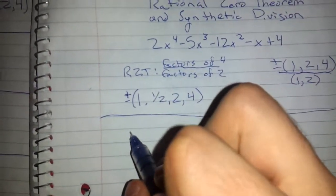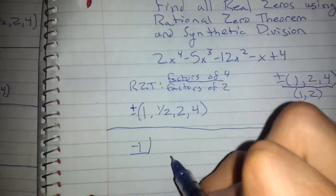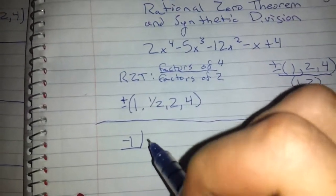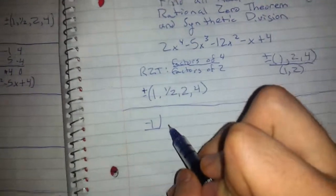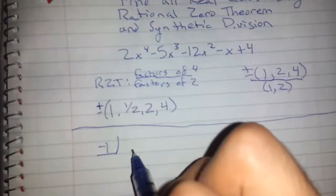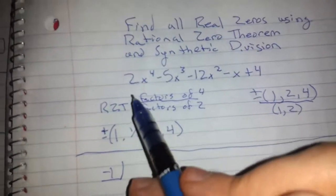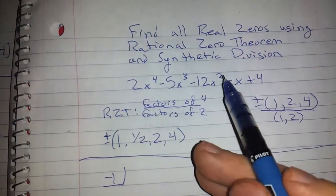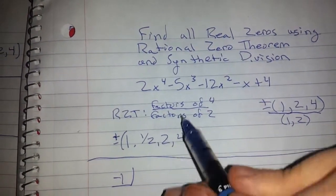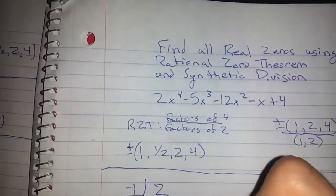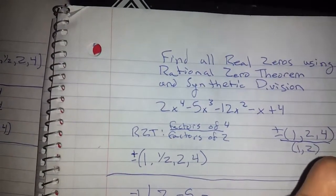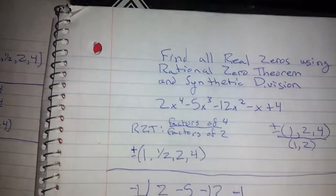Luckily for me, that was only negative 1. So we're saving a little bit of time here. Synthetic division, as you may know, uses the coefficients from these values. So we're going to have a 2, a negative 5, a negative 12, a negative 1, and a 4.